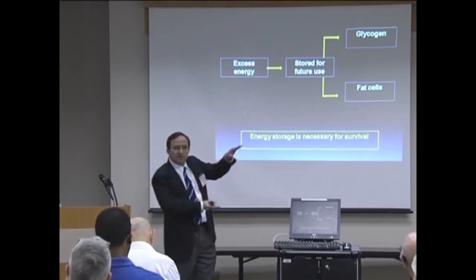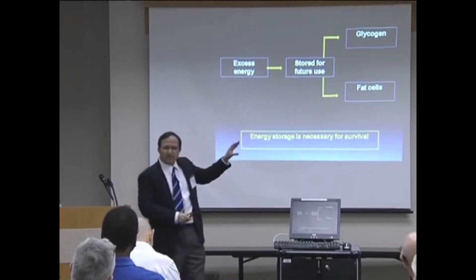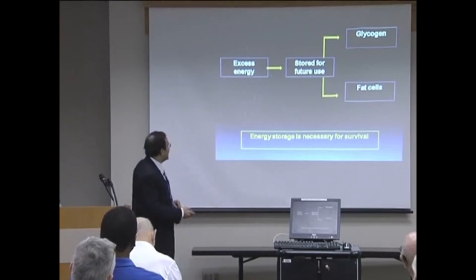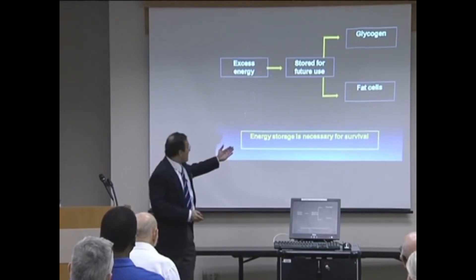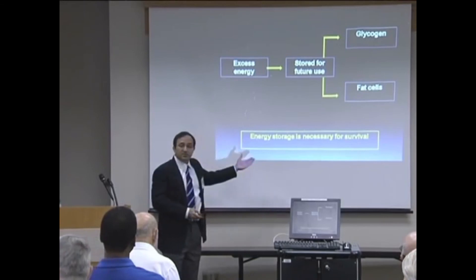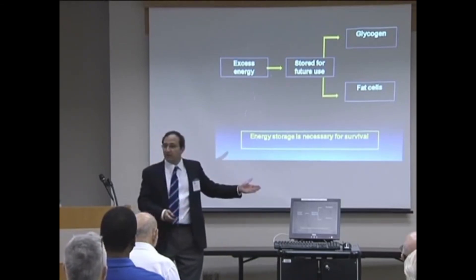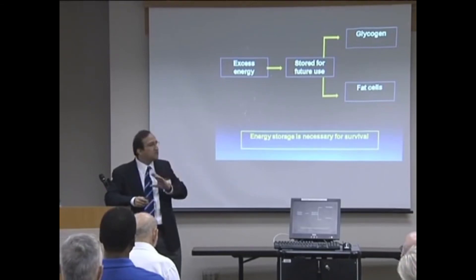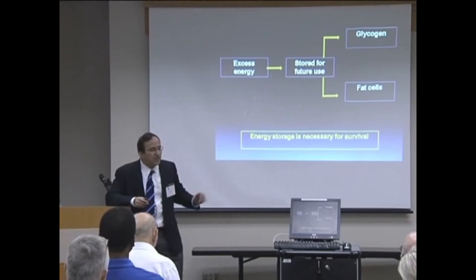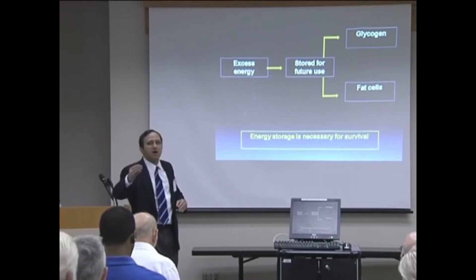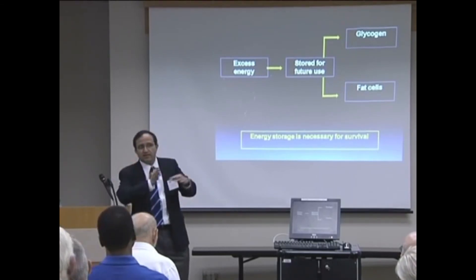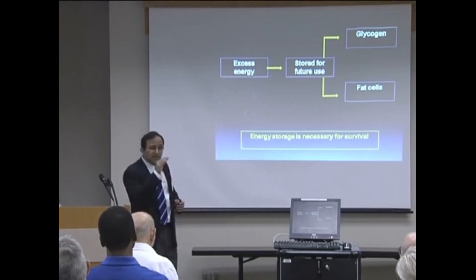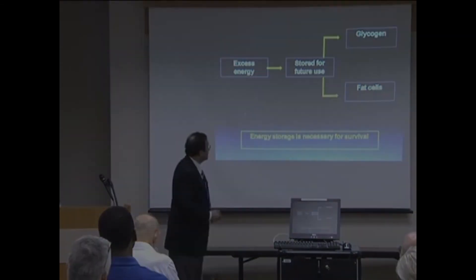So the excess energy gets divided: very little gets stored as glycogen, and much of it gets stored in fat cells. The key point is that energy storage is necessary for survival — having fat stored in the body is not a bad thing. When it becomes too much — excessive — and depending on where it is stored, those are the points we'll cover today. That's when trouble starts.